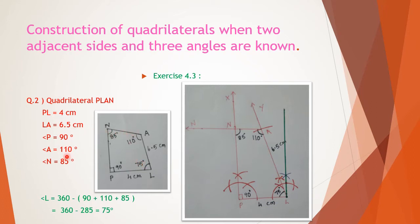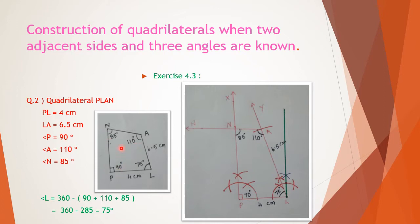We already have three angles, but with only three angles we are unable to do the construction, so we need to find the fourth angle. We have angles P, A, and N given. Angle L is not given. To find it, we subtract from 360°: 85 + 110 + 90 = 285, and 360 − 285 = 75°. So angle L is 75 degrees.